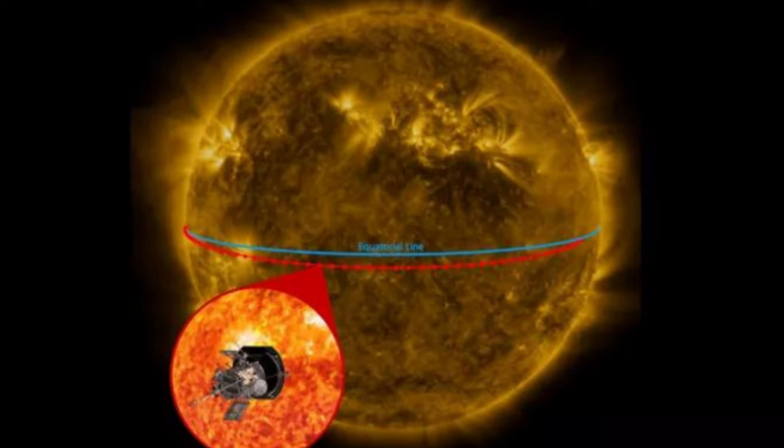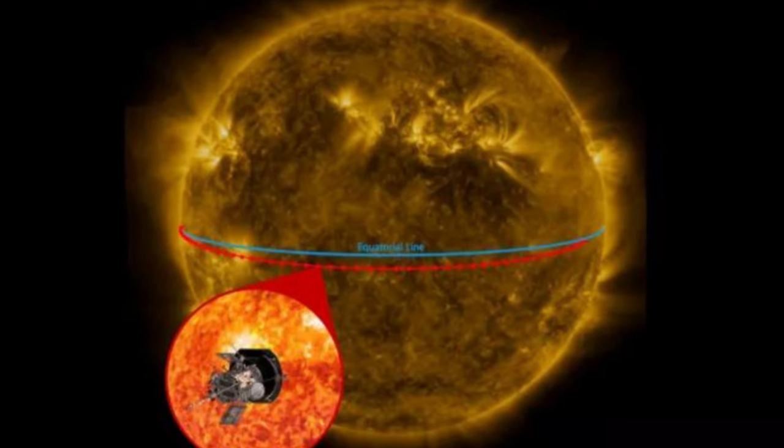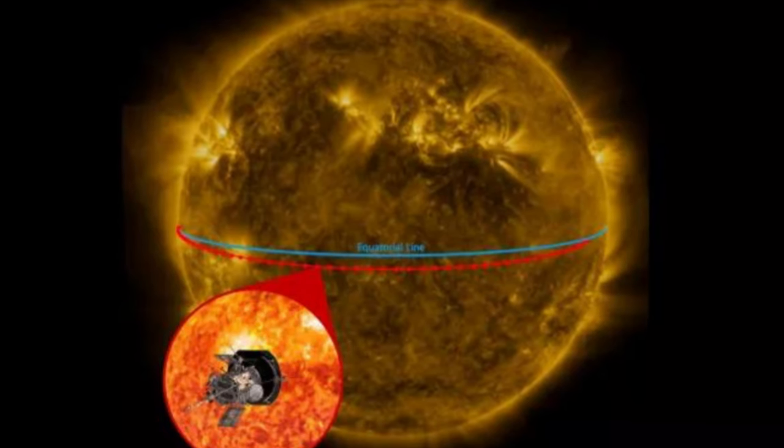Pointing to the sun's 11-year cycle starting to ramp up, Ruafi added the team can't wait to see the data that Parker Solar Probe gathers as it gets closer and closer.